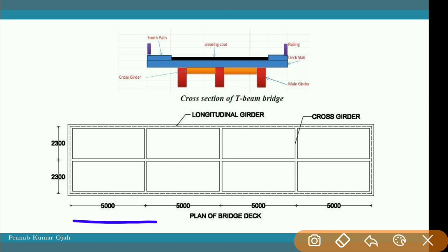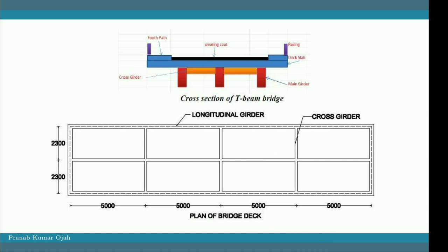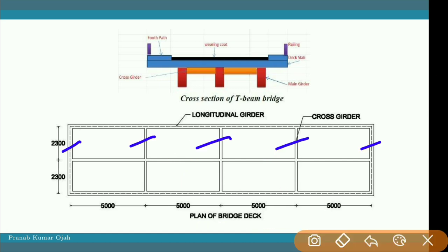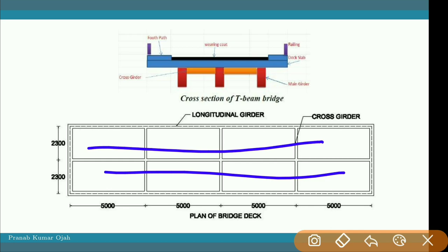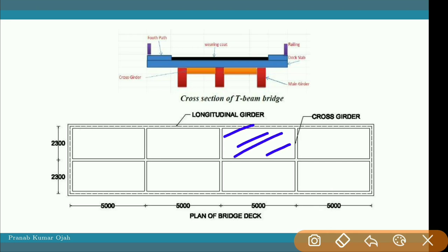Looking at the plan of the bridge deck, there are three longitudinal girders placed along the deck, with one at the center line. The bridge has three longitudinal girders and five cross girders. A continuous slab panel is laid over the bridge in between the longitudinal girders and the cross girders.